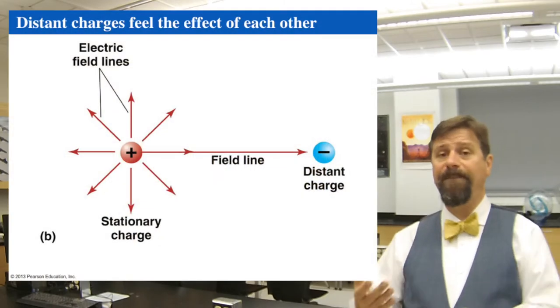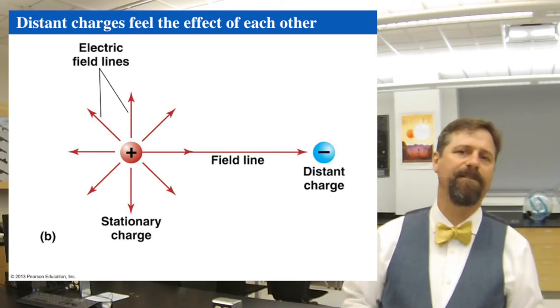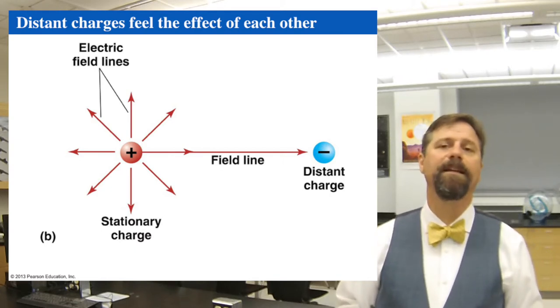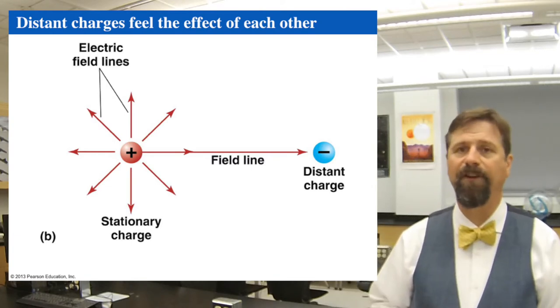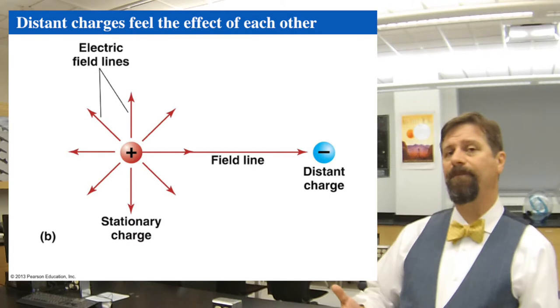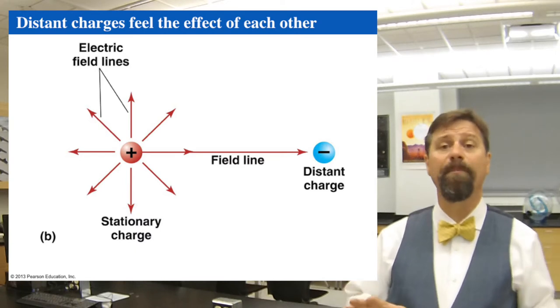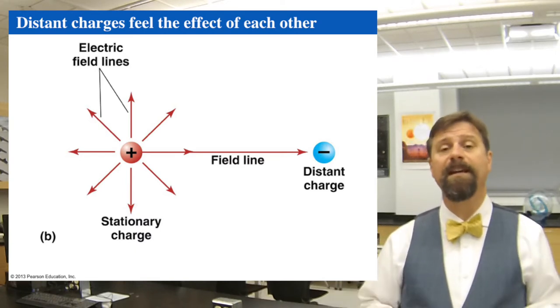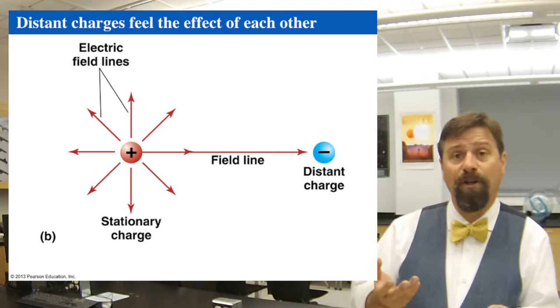Distant charges feel the effect of other charges. All charges feel the effect of other charges through the electric field they generate. Space is permeated by the electric field due to charges. If they're all standing still, all these electric fields don't move — they're just sitting there. If all the charges in the universe are pinned to one place, everything would be pushing or pulling with the electric field, depending on the signs of their charges, and that tells us how they're going to move.